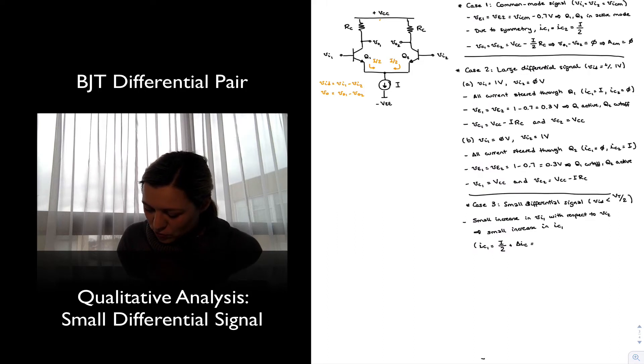And so we're going to rewrite it as I/2 plus, and I don't know if you can perceive this, hopefully you can, but this will be plus i_c, and this is lowercase i, lowercase subscript. This is the small signal i_c, or in other words, the delta.